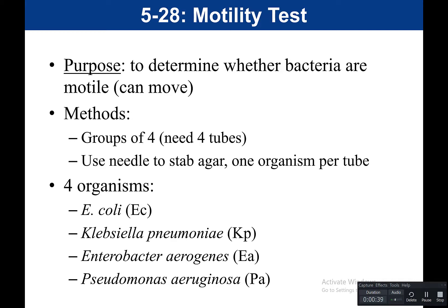This experiment would be done in groups of four. You would need four motility agars, and it is going to be a semi-solid, so you would use a needle to stab the agar. The technique to inoculate this is very similar to how we inoculate an OF broth — we stab inoculate. We go to about one centimeter from the bottom, and we come straight back up. Your group of four would have four tubes: one with E. coli, one with Klebsiella pneumoniae, one with Enterobacter aerogenes, and the last one with Pseudomonas aeruginosa.